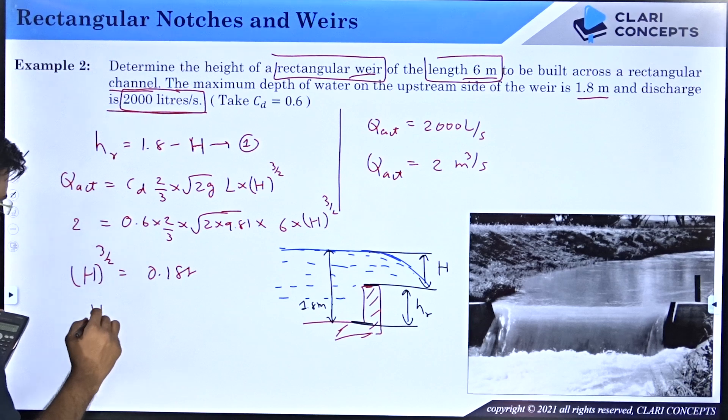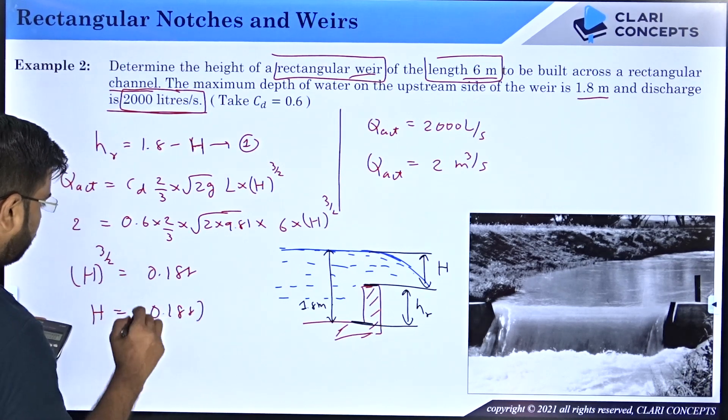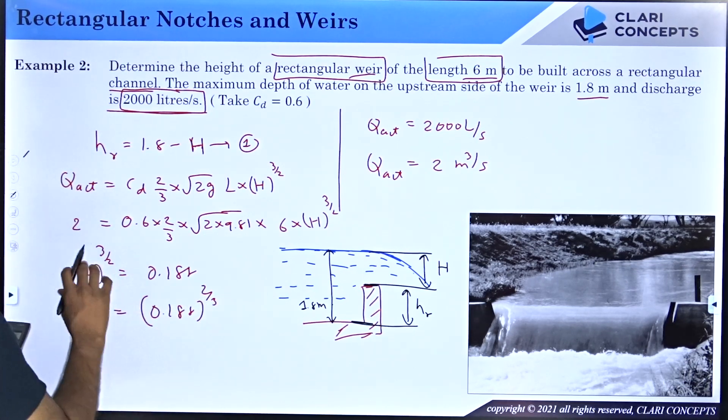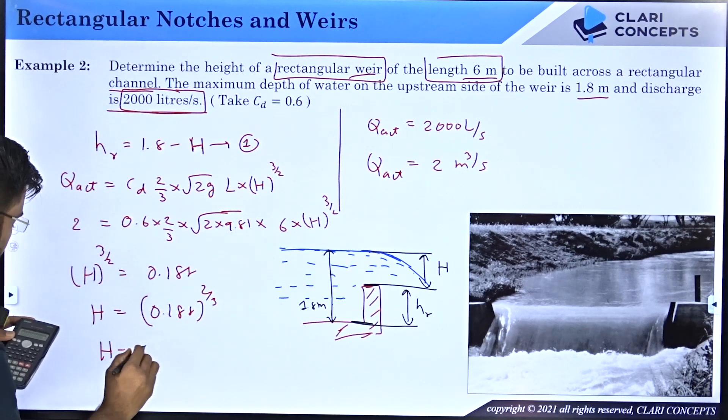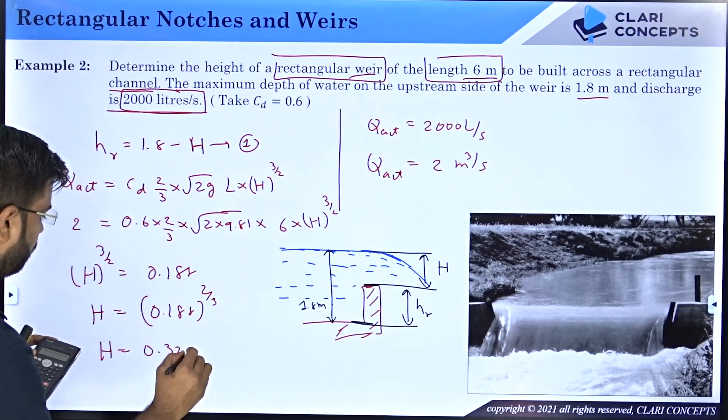And now if you want to calculate h you have to do 0.188 raise to 2 by 3. So this is the reverse when it takes on the right hand side. This is raised to 2 by 3. You will get h is 0.328 meters.